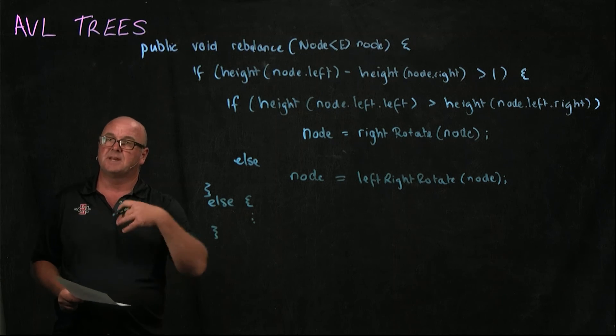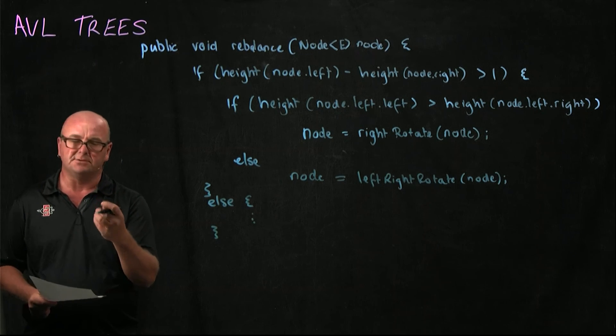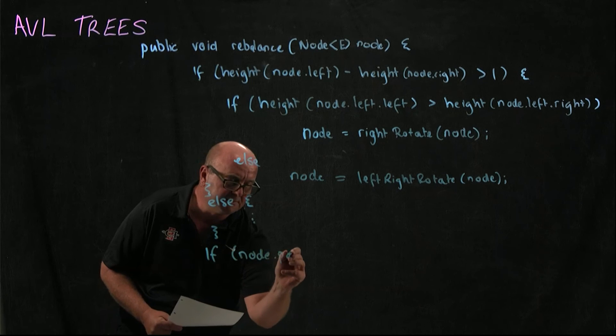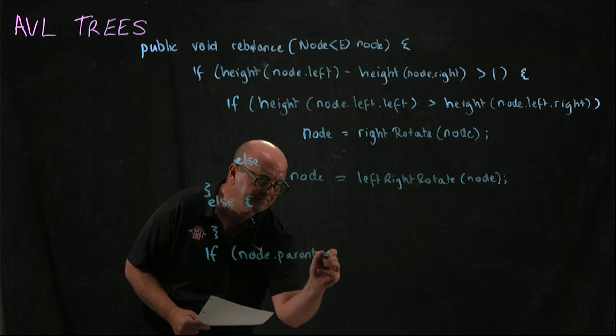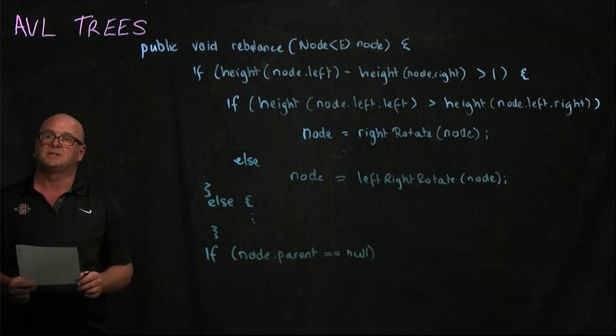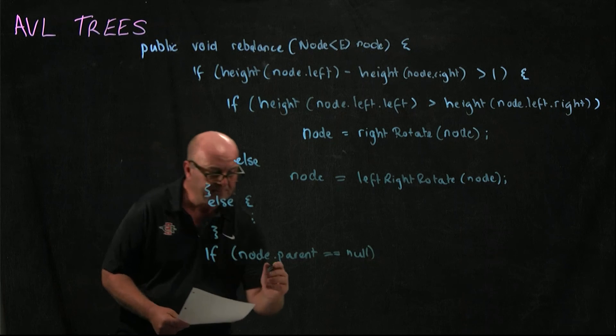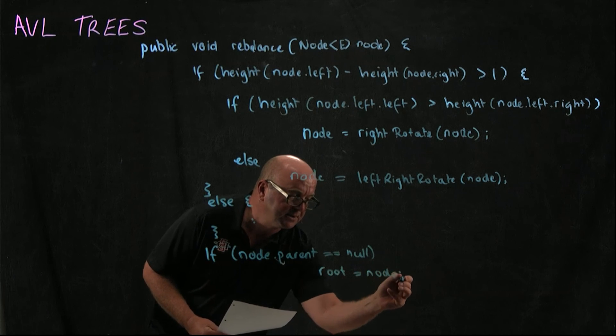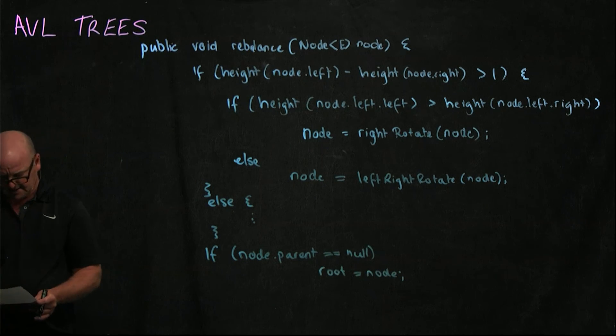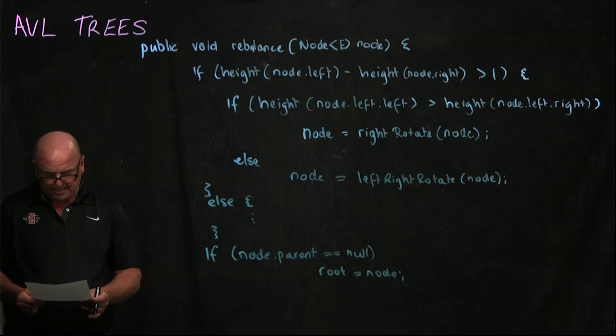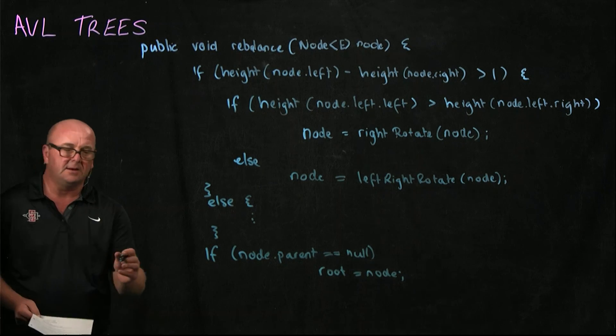After our rebalancing, don't forget that we may need to readjust the root. So we need to say if node.parent is null, then we're at the root. And so we want to reset our root pointer, which is a globally scoped pointer. So then we say root is equal to node. And then we can get out of there.